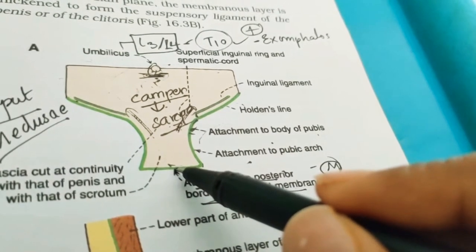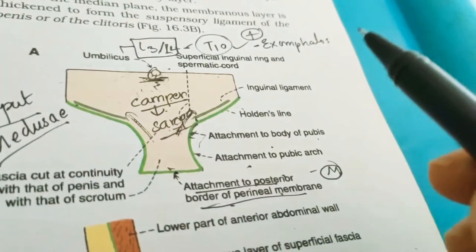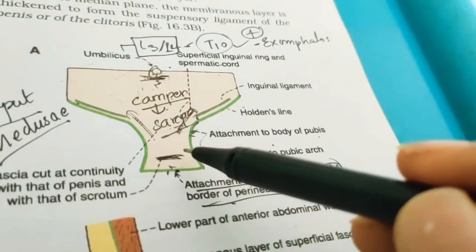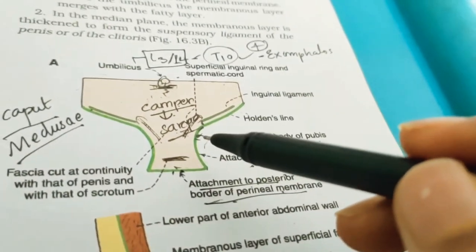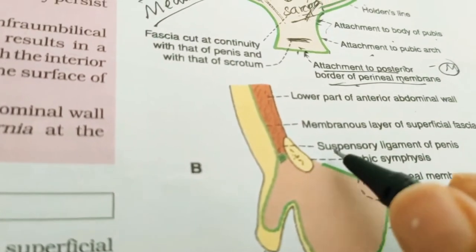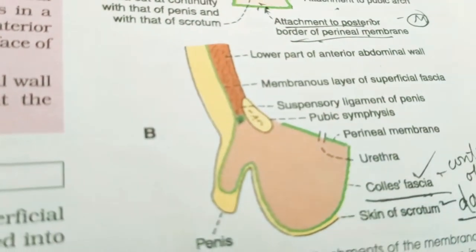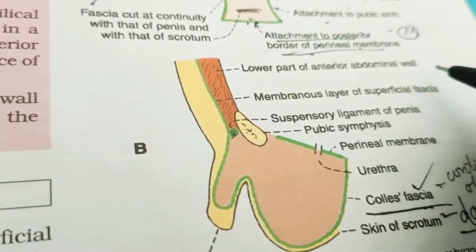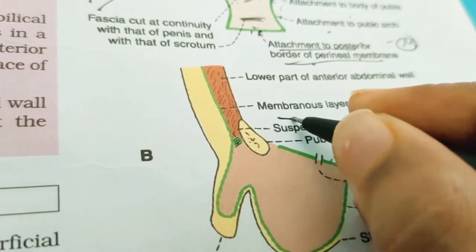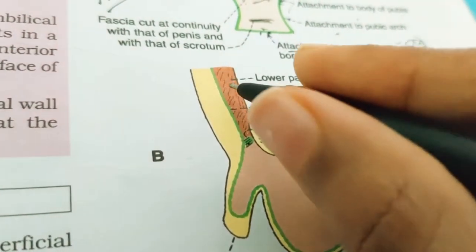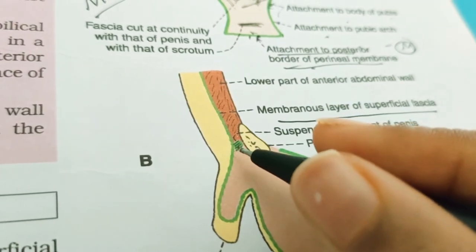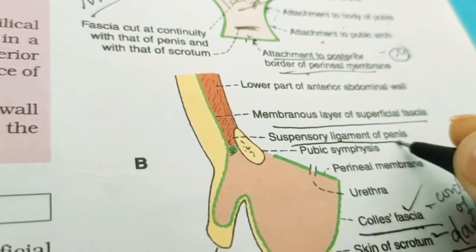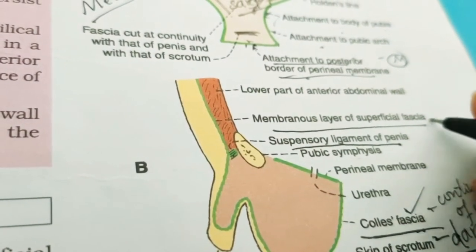Above the umbilicus, the membranous layer merges with the fatty layer. In the median plane, the membranous layer is thickened to form the suspensory ligament of the penis or clitoris. This suspensory ligament is formed by the membranous layer of the superficial fascia — that is, Scarpa's fascia — thickening in the midline.